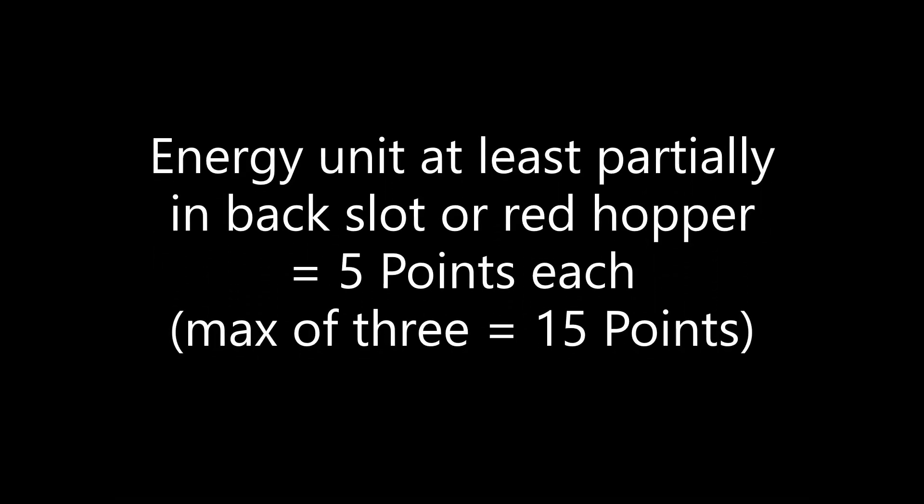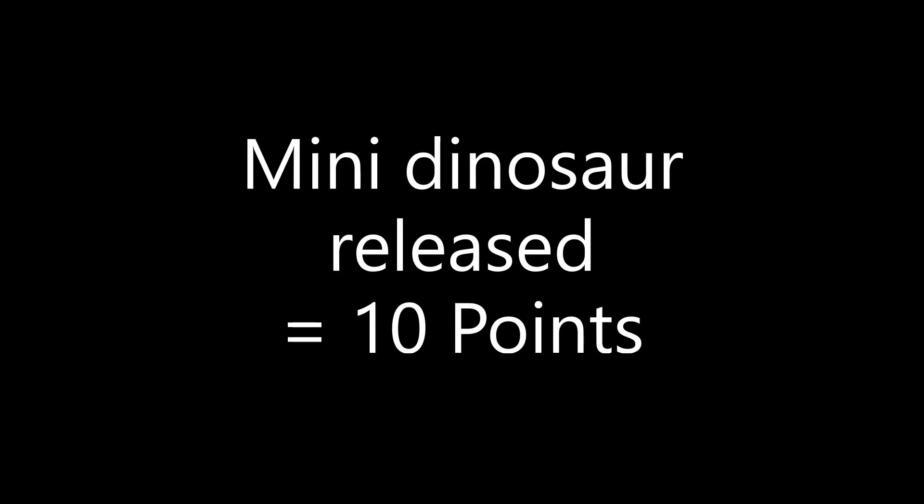For solving this mission you earn 5 points for each energy unit that is at least partially in either the back slot or the red hopper at the end of the match. You only get points for up to 3 energy units however. And you have to make sure that none of your energy units touch your equipment at the end. If the mini dinosaur has slid down the ramp an additional 10 points are scored, for a total of 25 possible points.